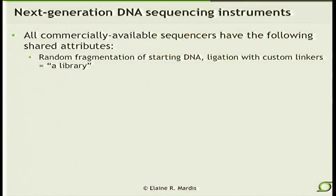All of the shared attributes start with making libraries. For those of you who may have done clone-based libraries for capillary sequencing, this is now faster, easier, and cheaper than ever. There's no need to run through an E. coli intermediate and no need to do cloning. It's a very straightforward process that begins with random fragmentation of the starting DNA you're interested in sequencing. If these are just PCR products, there's no need for fragmentation — you can go directly to ligation of these fragments with custom linkers or adapters to make a library. Library construction is basically the same approach across all instruments, each with their own specific adapters.